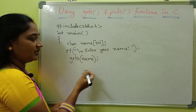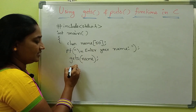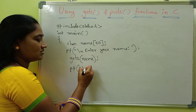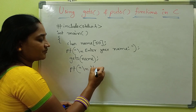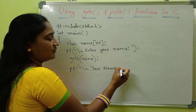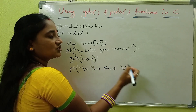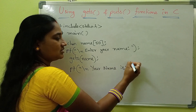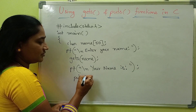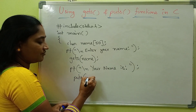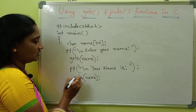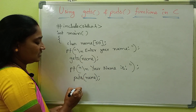After gets(name), we write printf — "Your name is" — and then we use puts. Puts of the variable name — puts(name). This is the complete program using gets and puts.